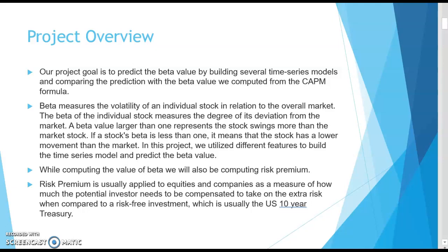Beta measures the volatility of an individual stock in relation to the overall market. The beta of the individual stock measures the degree of its deviation from the market. A beta value larger than 1 represents a stock that swings more than the market. For example, if a stock has a beta value of 1.5, this means that if the stock market goes up by 1 percent, the return on that stock would go up by 1.5 percent. This is usually seen in tech stocks like Apple and Microsoft, whose valuation keeps increasing.